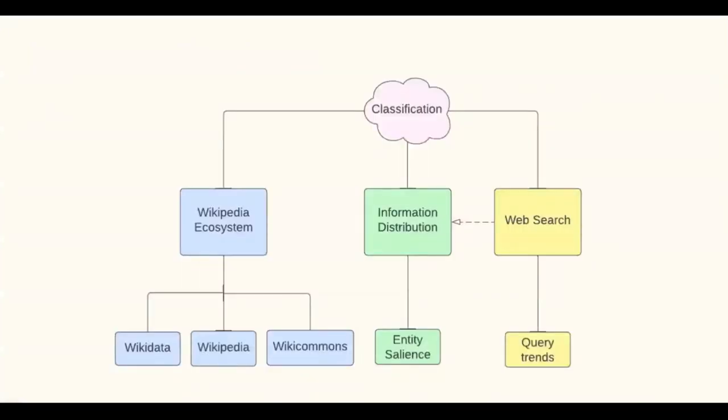For classification in the abstract setting we rely on three aspects: first, Wikipedia ecosystem features similar to the generic setting; second, information distribution features as a replacement for domain-specific features, involving identifying relevant documents and performing entity salience analysis; and third, query log analysis via Google Trends, similar to the generic setting.